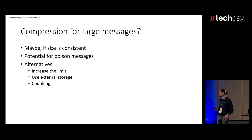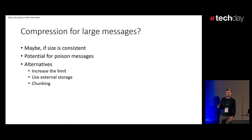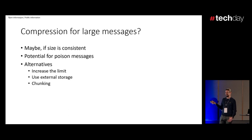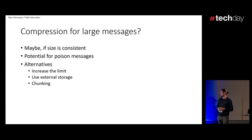So what do you do in that case? You can ask the operations team to increase the limit on Kafka, which they probably won't be happy with because it affects memory on the brokers. The other option is to use external storage — take your payload, upload it to S3 or whatever you have, and then instead of sending the payload in Kafka, just send the reference to the actual message. The third option, recommended only if you control both the producer and consumer, is chunking: your producer slices the messages into smaller groups, and then your consumer assembles them back into the original message.